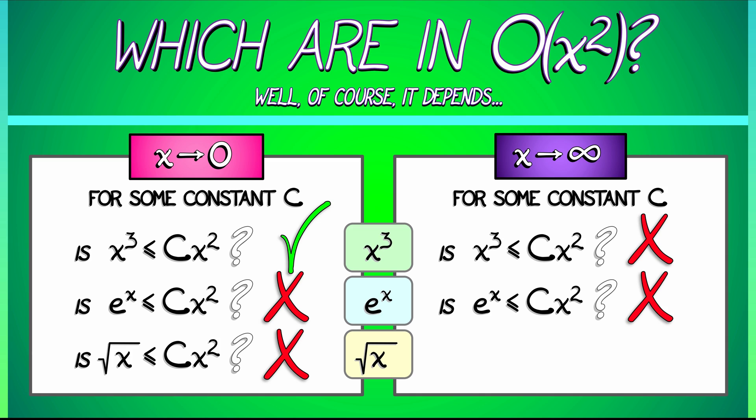But, of course, as x goes to infinity, oh yeah, quadratic growth definitely bounds square root growth. So, what we see is that square root of x is in big O of x squared as x goes to infinity, but is not in big O of x squared as x goes to zero.